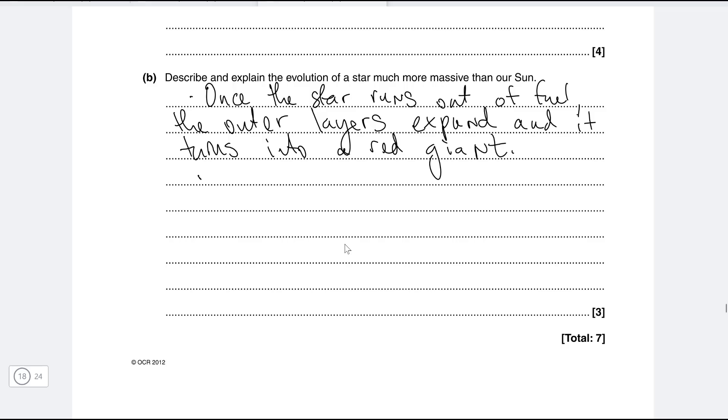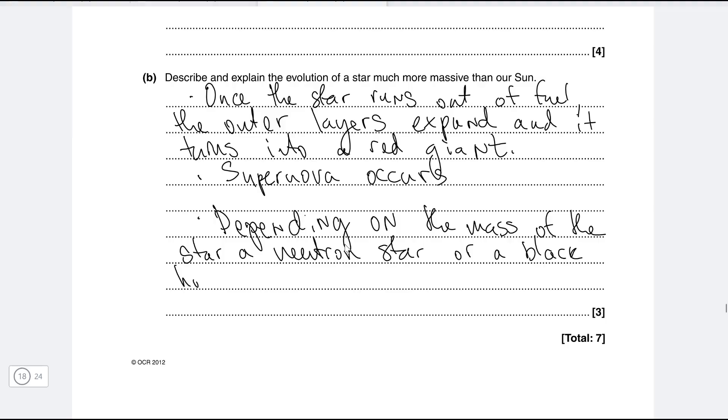Now the red giant stage doesn't last long. After that a supernova will occur and then depending on the mass of the star we're either going to have a neutron star or a black hole. So depending on the mass of the star a neutron star or a black hole will be formed, and that will be one mark for each of those statements.